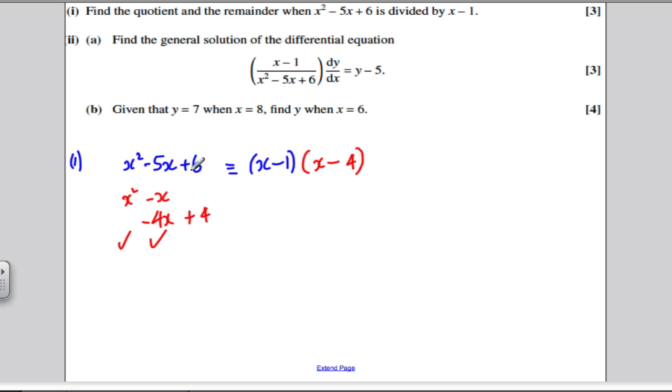But I want plus 6, so I've got to add 2 onto the side, so add 2. So therefore, what is the quotient? The quotient is x minus 4. And what is the remainder? The remainder is simply the number 2.